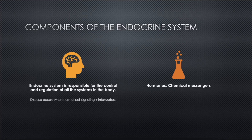Hormones are chemical messengers secreted into the bloodstream by the endocrine glands — picture them as the neurotransmitters of the endocrine system. Neurotransmitters send signals within the brain and spinal cord, while hormones serve as chemical messengers for the endocrine glands. They're not as fast as neurotransmitters, but their actions can be longer-lasting. Hormones circulate throughout the body and target organs to maintain homeostasis — that balance the body constantly seeks.